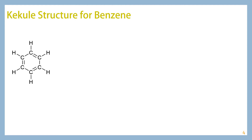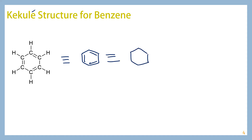Eventually it was determined that the structure of benzene is what we see today. This is known as the Kekulé structure for benzene, and it is equal to how we normally draw benzene, just with more information. This structure is equal to drawing benzene with the double bonds in slightly different positions — these two are resonance forms. Because of that, you can draw benzene in a way that shows the double bond is evenly shared across all of these bonds.